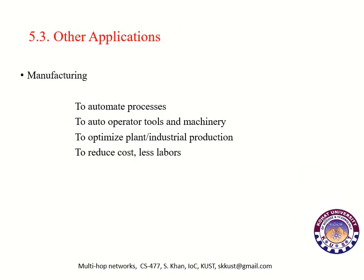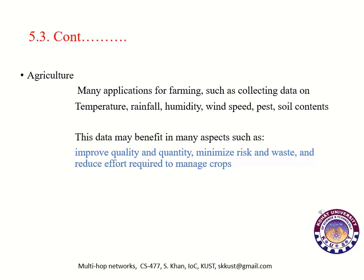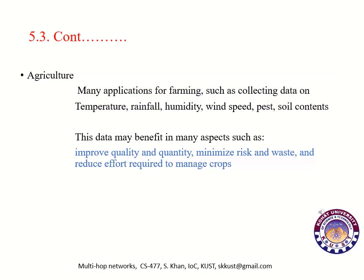Other Applications: IoT can be used in many other applications such as the manufacturing sector. In manufacturing, IoT is used to automate processes, auto-operate tools and machinery, optimize plant or industrial production, reduce cost, and reduce labor. Another important application is agriculture. Many applications for farming include collecting data on temperature, rainfall, humidity, wind speed, pest, and soil contents. This data may be used to improve quality and quantity of seeds, minimize risk and waste, and reduce the effort required to manage crops.